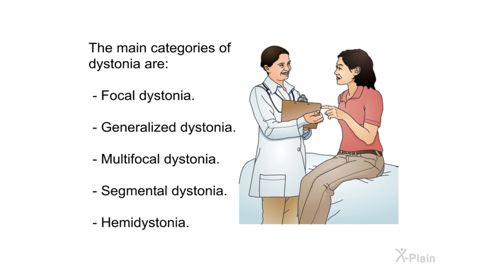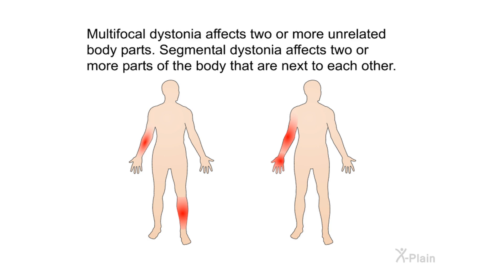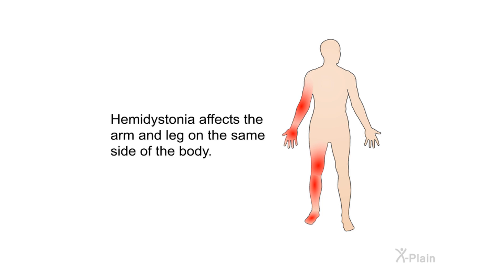The main categories of dystonia are: focal dystonia, generalized dystonia, multifocal dystonia, segmental dystonia, and hemi dystonia. Focal dystonia affects one specific part of the body. Generalized dystonia affects more or all of the body. Multifocal dystonia affects two or more unrelated body parts. Segmental dystonia affects two or more adjacent body parts. Hemi dystonia affects the arm and leg on the same side of the body.